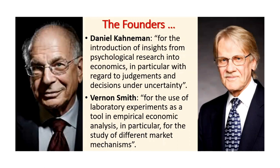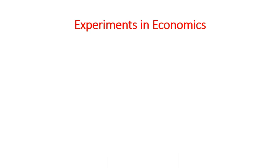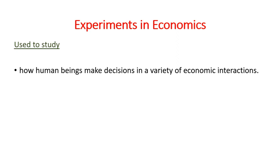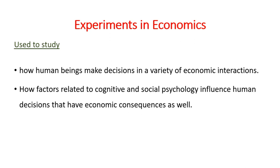Nowadays, economists use experiments to study how human beings make decisions in a variety of economic interactions, especially those requiring strategic thinking. Given that we wish to study the process of human interactions, the research agenda broadly overlaps with those of both cognitive and social psychologists. Experiments help us study this kind of issues.